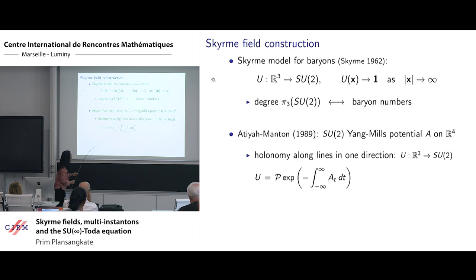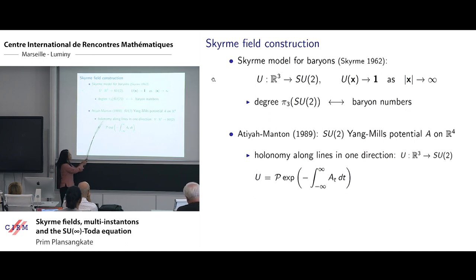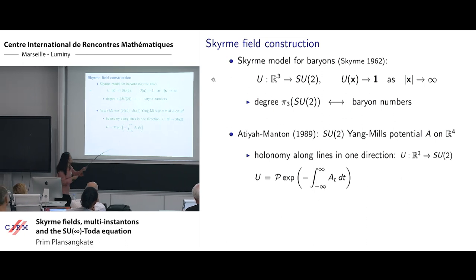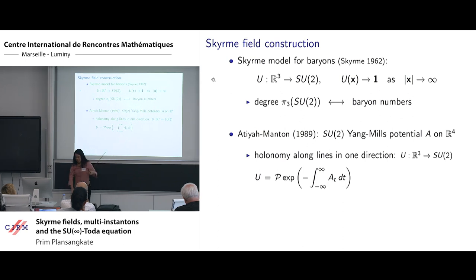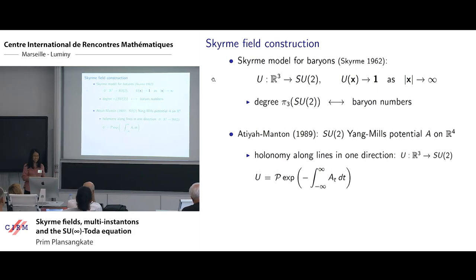It was first done by Atiyah-Manton, who constructed Skyrme field from the holonomy of a Yang-Mills instanton on R4 along lines in one direction. In that work, they look at the lines parallel to the time axis. So this is the corresponding component of the potential here.